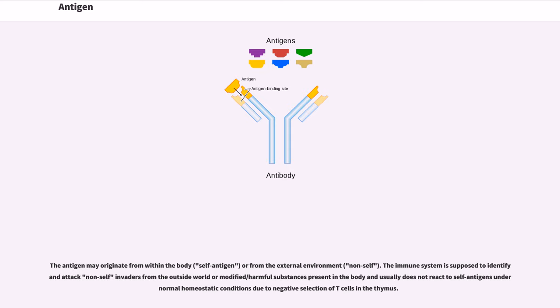The antigen may originate from within the body, self-antigen, or from the external environment, non-self. The immune system is supposed to identify and attack non-self invaders from the outside world or modified or harmful substances present in the body and usually does not react to self-antigens under normal homeostatic conditions due to negative selection of T-cells in the thymus.